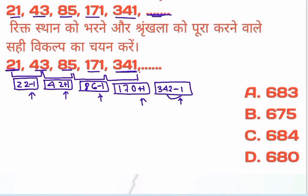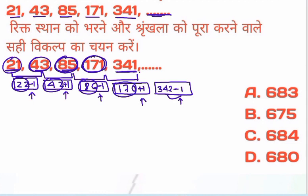Then there is an interesting question as well. You can have 81 or 22, so it is 43. Then you have 43 and 42, you can have 85. Then you will have 86 plus 171.